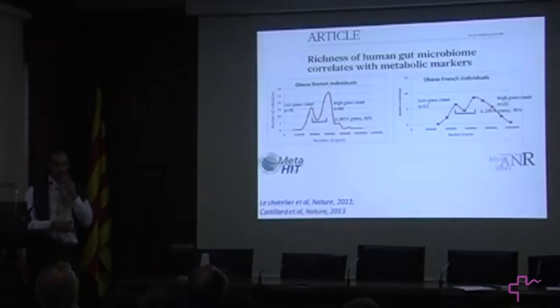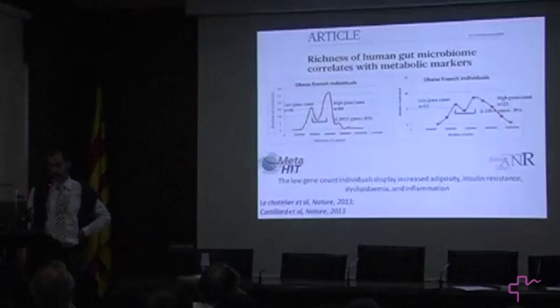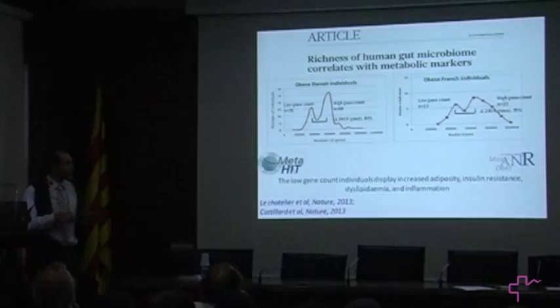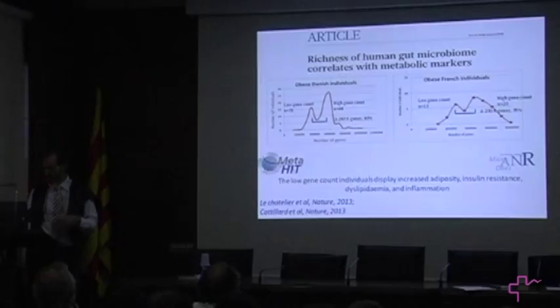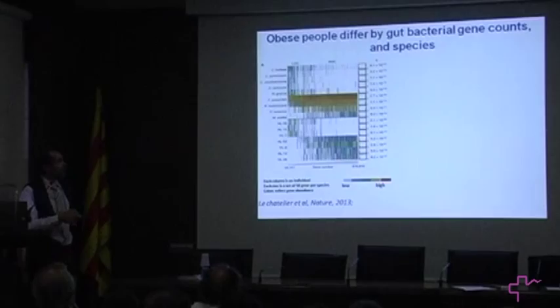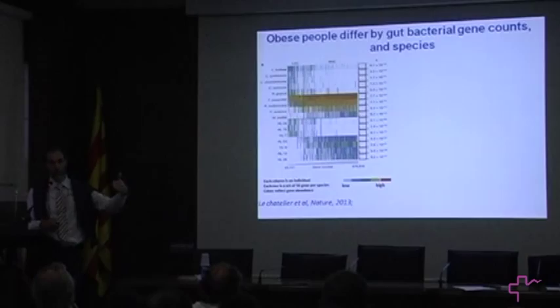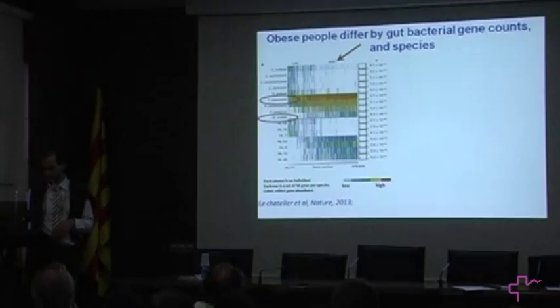The distribution is approximately the same across the Danish and French cohorts we studied. When we look at the phenotype of patients based on adiposity, blood cholesterol, blood triglycerides, inflammation, and insulin resistance, we see that patients with low gene count are in the worst context in terms of overall parameters of obesity — most of which are markers of risk of comorbidities such as cardiovascular complications or diabetes. We can identify species that are markers of low versus high gene count, and those will possibly turn into predictors.